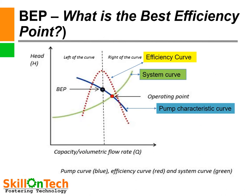What is the best efficiency point (BEP)? You can see an HQ curve and an efficiency curve in this slide. The line intersecting at the highest point of the efficiency curve gives the best efficiency point. However, in industry, pumps do not operate at this point because they must operate against a system head curve. Where the system head curve intersects the HQ curve is the actual operating point of the pump.